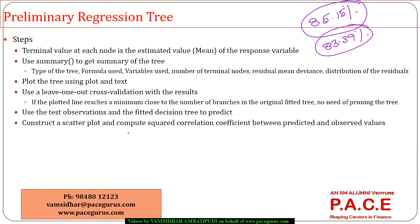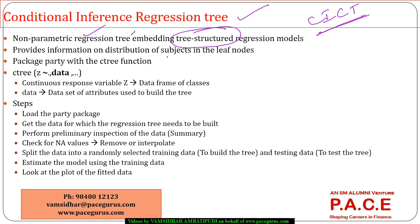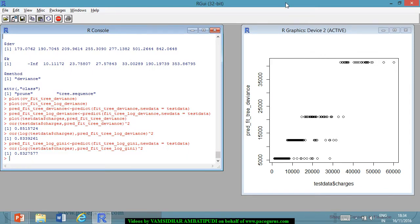Now moving on to the conditional inference regression tree. This is more or less similar to the conditional inference classification tree. It is a non-parametric regression tree with a tree-structured regression model embedded in it. Apart from building the tree structure, extra information is provided at the leaf nodes level — that is the better assessment feature of the conditional inference regression tree.